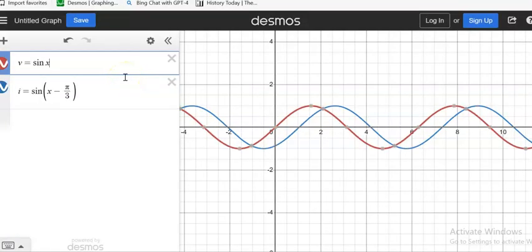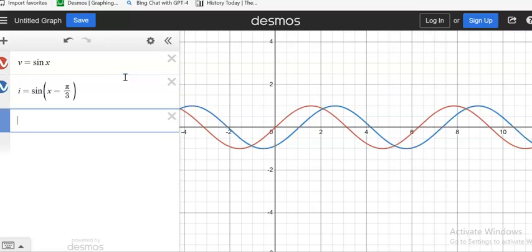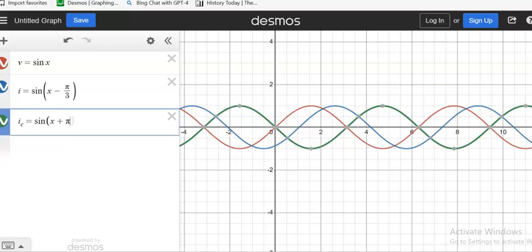Let us consider a voltage of sine x and current of sine x minus 5π/3. That is 5π/3 shift with respect to the voltage. Now I am going to add a capacitor bank here, i_c. The capacitor current is always sine x plus 5π/2.